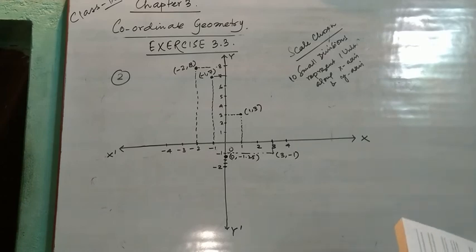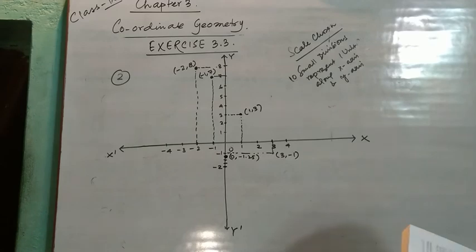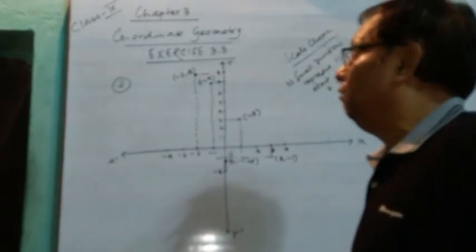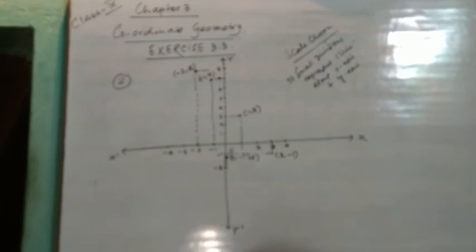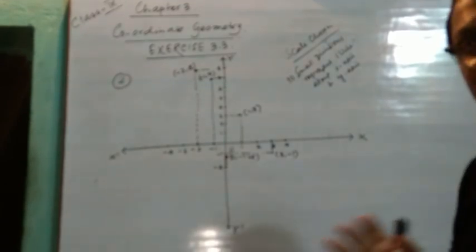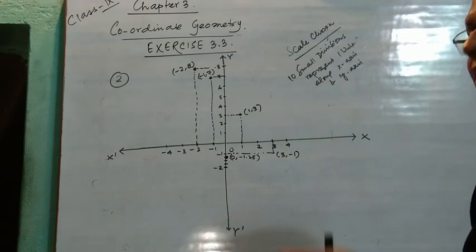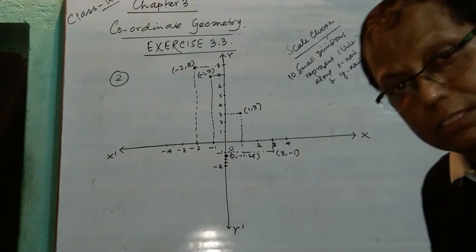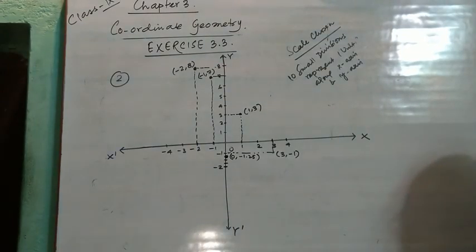Hope students, you have understood. In your fair copy, you will definitely solve each and every question that I have discussed so far. In this way, we have completed Chapter 3, which is the chapter on coordinate geometry. We will meet again in the next chapter, that is Chapter 4. Till then, do all the sums of Chapter 3, and in case of any confusion or doubt, feel free to ask me questions. Thank you and goodbye.